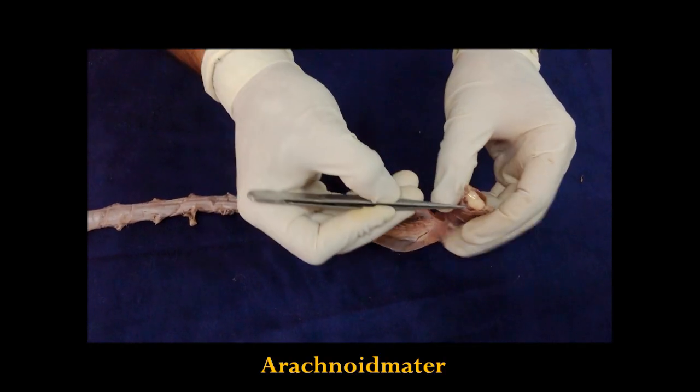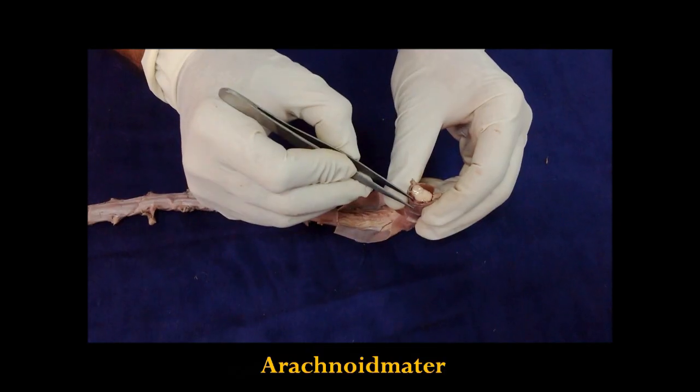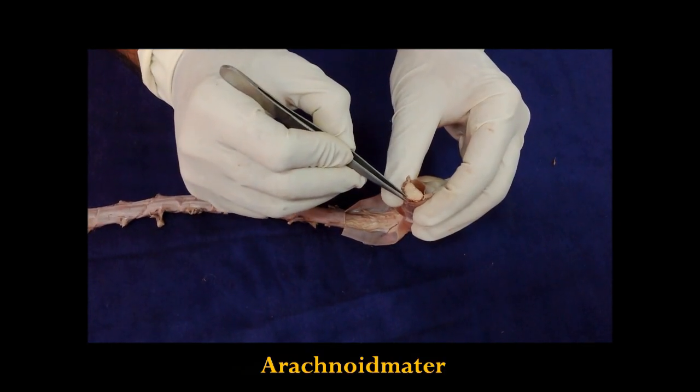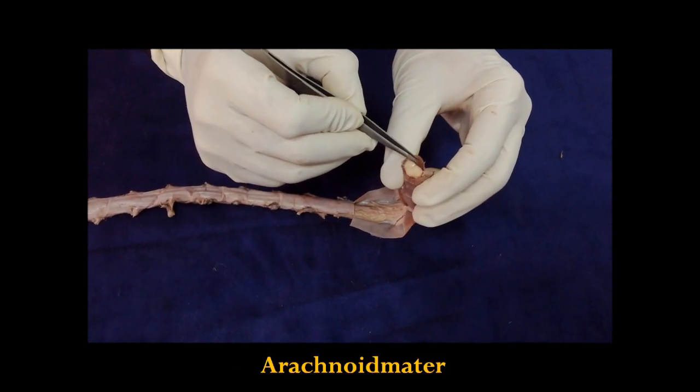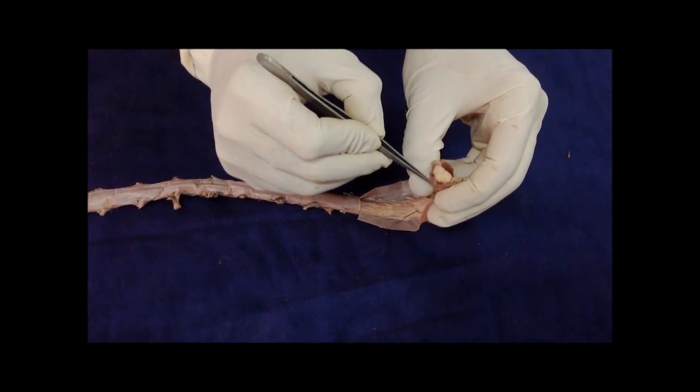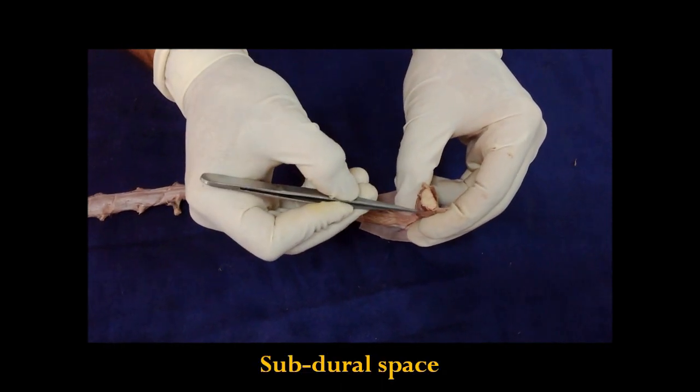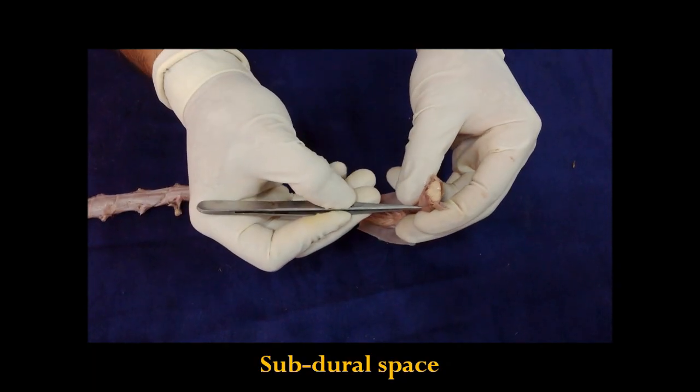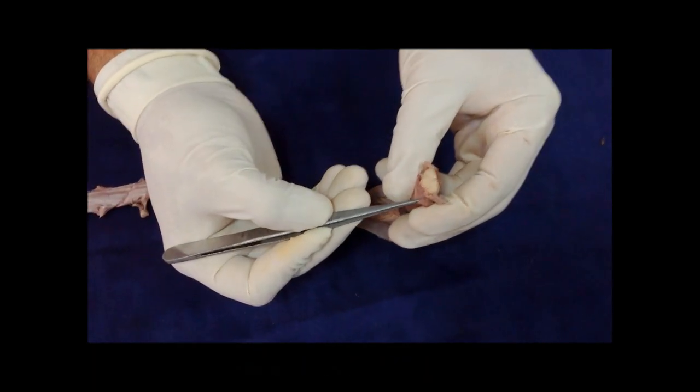You can see that very thin delicate membrane. There is not much space between dura and arachnoid. Now I have put the forceps in the subdural space and you can see that thin membrane which is arachnoid mater.